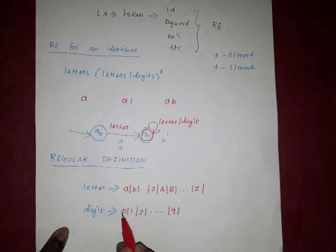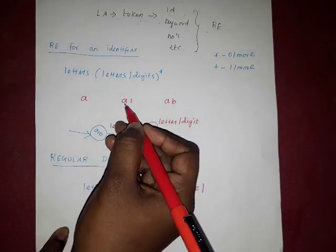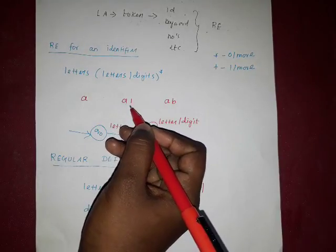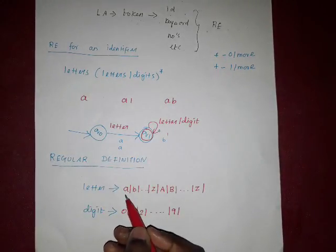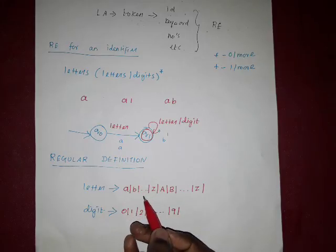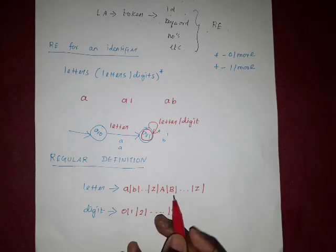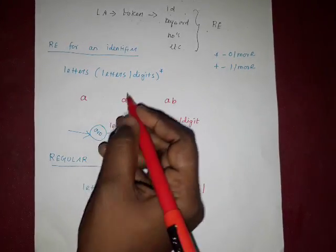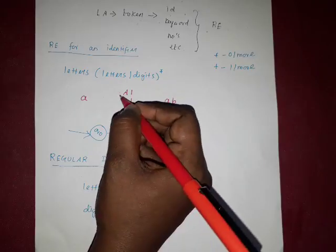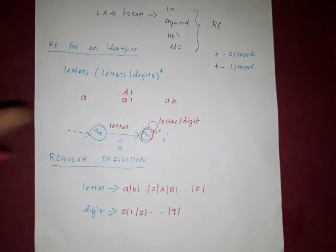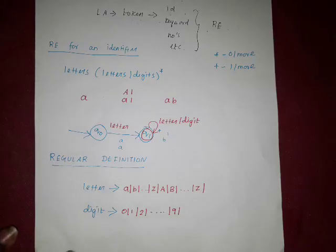For digit, the regular definition is 0 up to 9, so any digit within this range. For letter, it may be either lowercase letters or uppercase letters — small 'a' to 'z' and capital 'A' to 'Z'. So even capital 'A1' is also an identifier. For a particular regular expression, we have to write a regular definition.